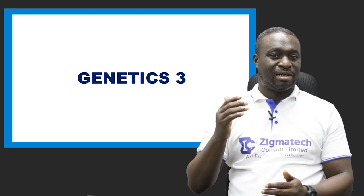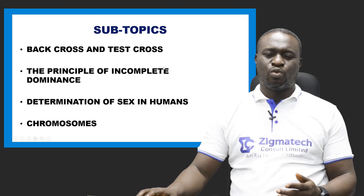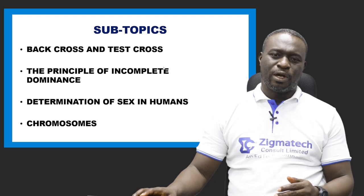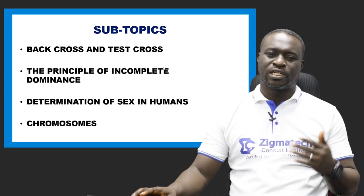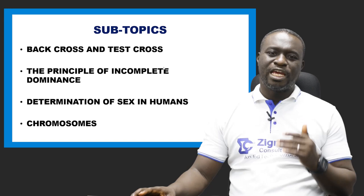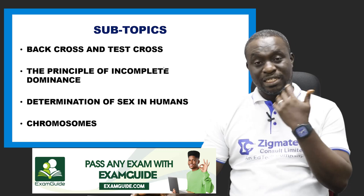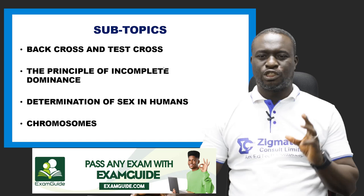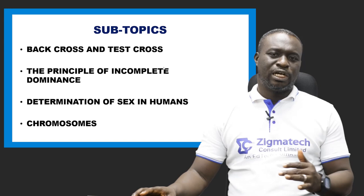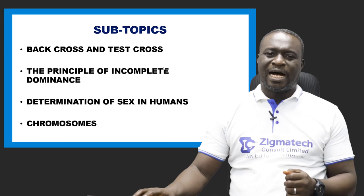Today we're going to be talking about something quite different — genetics part three. We're going to be talking about back cross and test cross, the principle of incomplete dominance, determination of sex in humans, and chromosomes. These are the areas we're going to be looking at in this aspect of genetics.